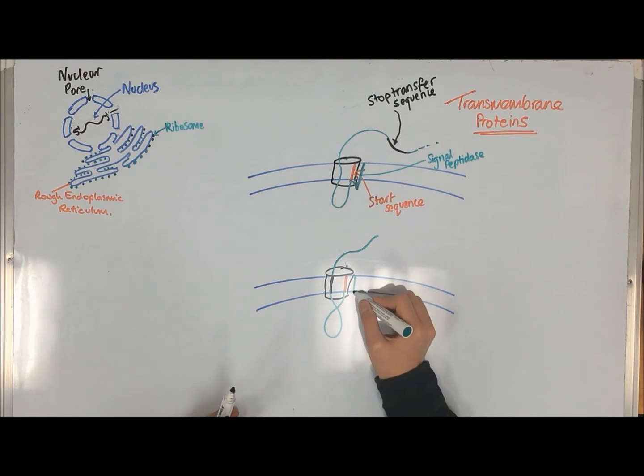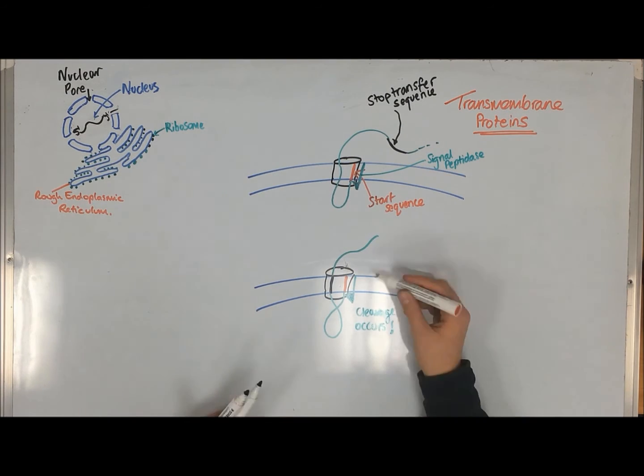These have a defined orientation, with a carboxylic acid group being on the external side of the membrane and an amino group being present on the internal side.